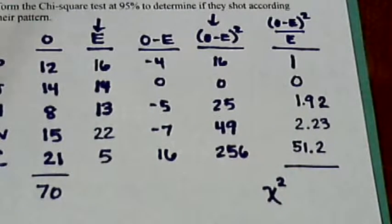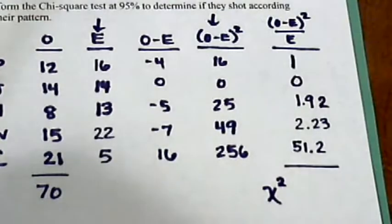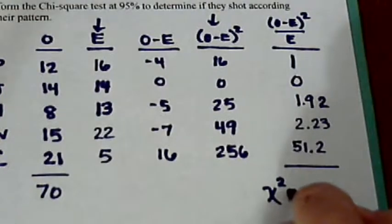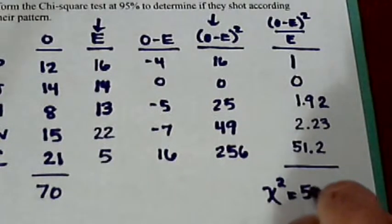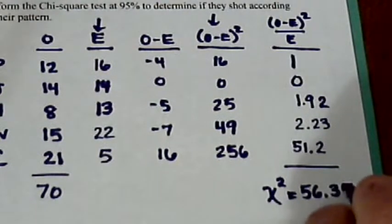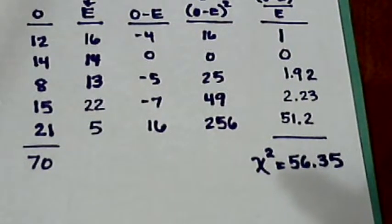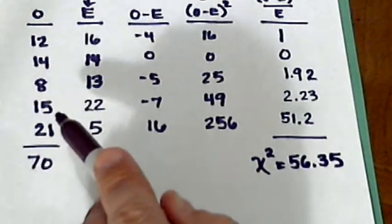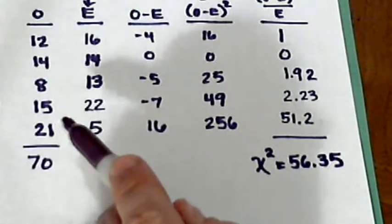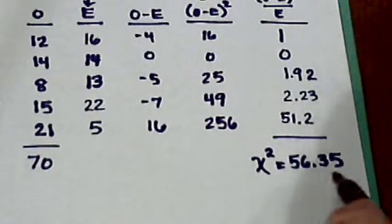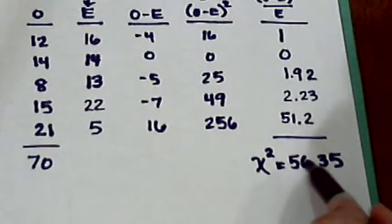1, 0, is 1.92, 2.23, 51.2. This gives us a chi-square value of 56.35. And if you go to the chi-square table for 95% with 4 degrees of freedom, because we've got 5 columns, the answer is about 9.4. It doesn't matter exactly what it is, but it's well under this one.